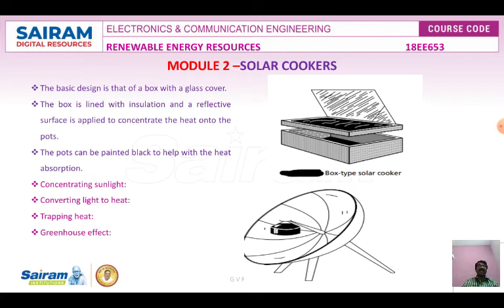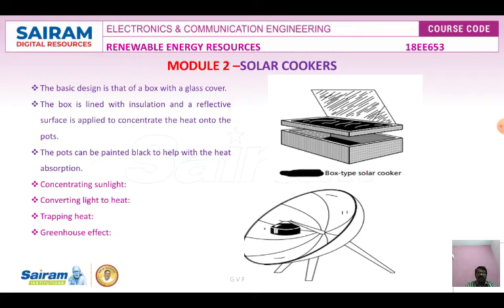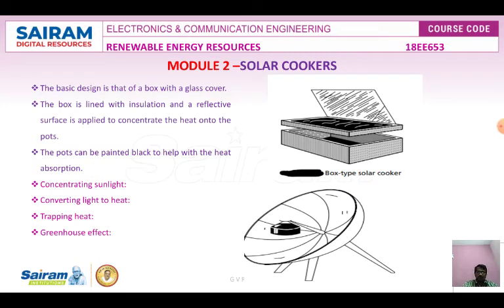In rural or village areas, fuels like kerosene, coal, petrol oil, or cow dung cakes and agricultural waste are used to heat and prepare food. These fossil fuels are fast-depleting resources and need to be conserved. Firewood used for cooking is a cause of deforestation, which is why alternatives like solar cookers are needed.